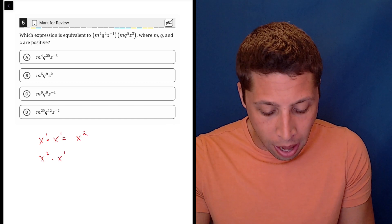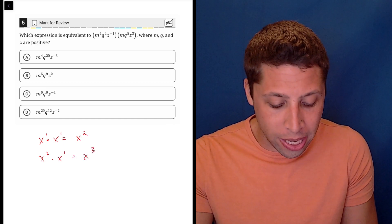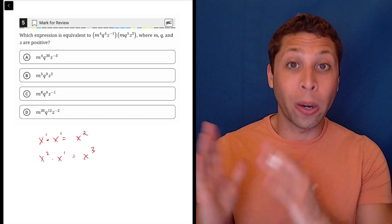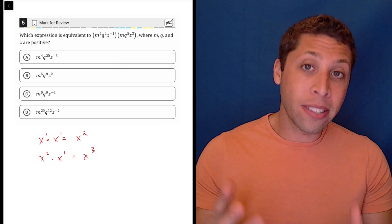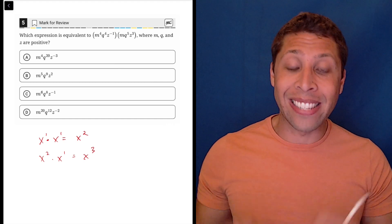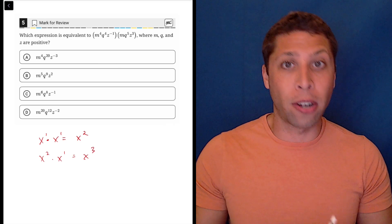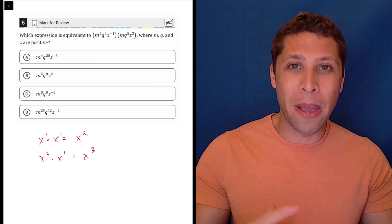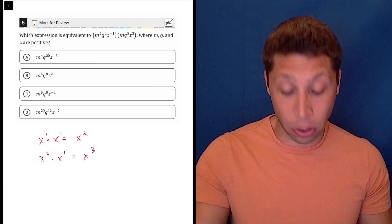Or if we had x squared times x to the first, well, now we have three x's, so that's x to the third. So we're adding those exponents. Even when we don't write the exponent because it's an x to the first, it's still there, it still matters, so it's still going to impact it in the same way that this rule works.